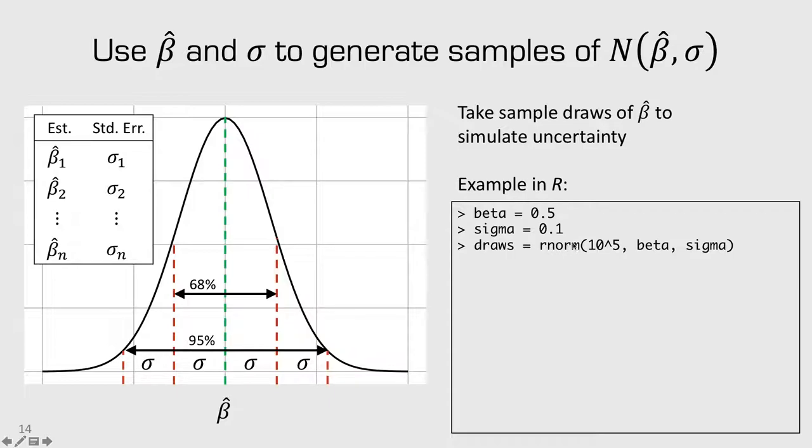Rnorm stands for random normal. The first input is how many draws we want to take, and so in this case I'm drawing 10,000 different values. The second input is the mean coefficient, and the third input is the standard deviation. So, this object draws now is an object of 10,000 different numbers that represent different possible values of beta.